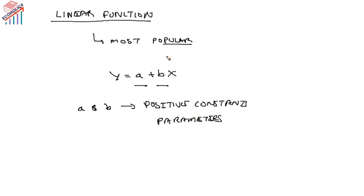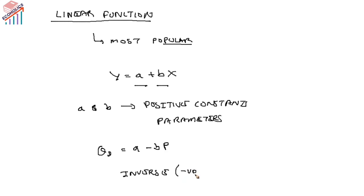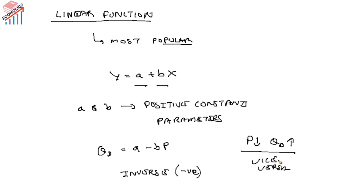The values of a and b are determined by the specific nature of the linear function. The demand function with price as the only independent variable is written as: quantity demanded = a − bP. The minus sign is used because there is an inverse relationship between the price of the commodity and the quantity demanded — whenever prices decline, quantity demanded goes up, and vice versa.